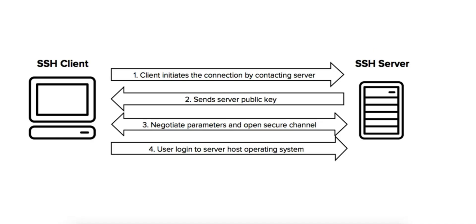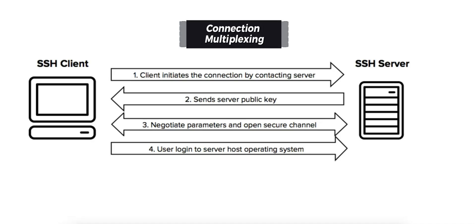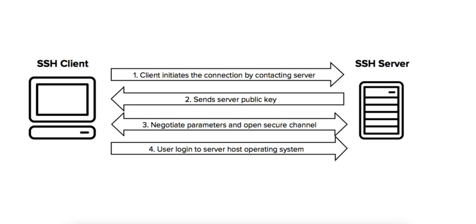SSH allows you to run multiple operations — for example, interactive terminal sessions and file transfers — simultaneously over a single SSH connection. This is done through a feature called connection multiplexing. You might be running a terminal session in one window while files are being transferred using SCP or SFTP in the background, all over the same SSH connection.